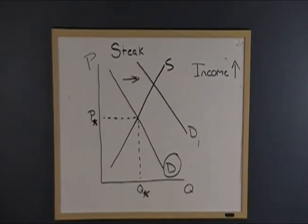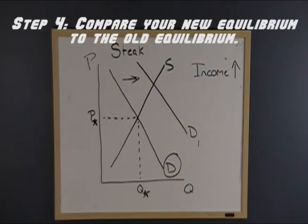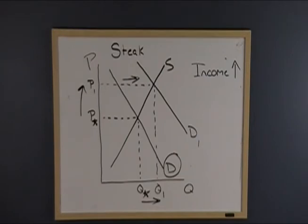Now our last step is we need to compare the original equilibrium price and quantity to our new ones. What do we see has happened to the equilibrium price and quantity? Well, they've both increased. Price has gone up, the price of a steak will go up, and the quantity of steak actually being sold will also go up.